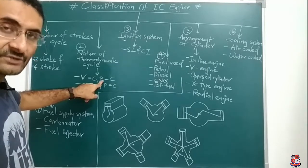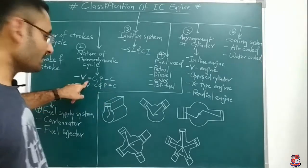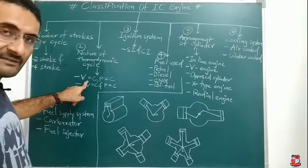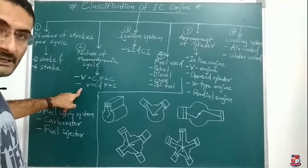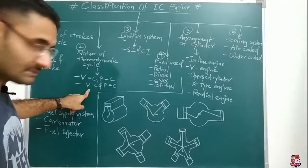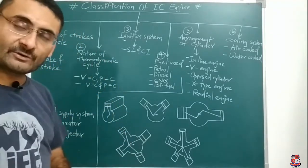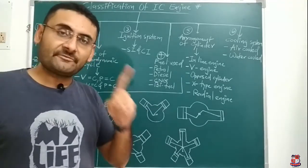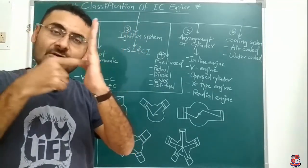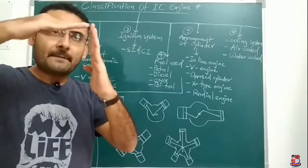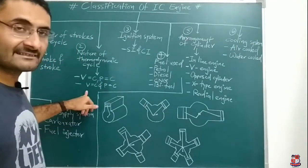Another one is constant pressure engine, which is your diesel engine. And the last one is constant volume as well as constant pressure. In the first case, heat is added at a constant volume process in the petrol engine. In the diesel engine, heat is added at a constant pressure process. The last engine is the dual engine. In a dual engine, partial heat is added at a constant volume process, and the remaining partial heat is added at a constant pressure process. So the name of this last engine is the dual engine.